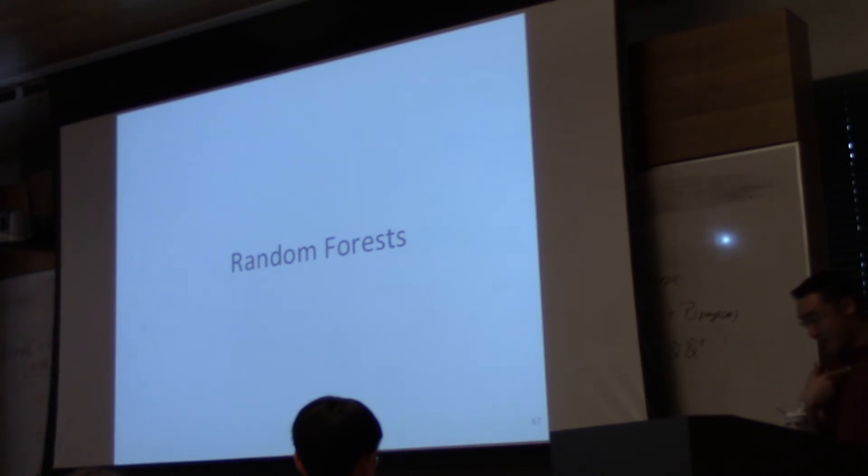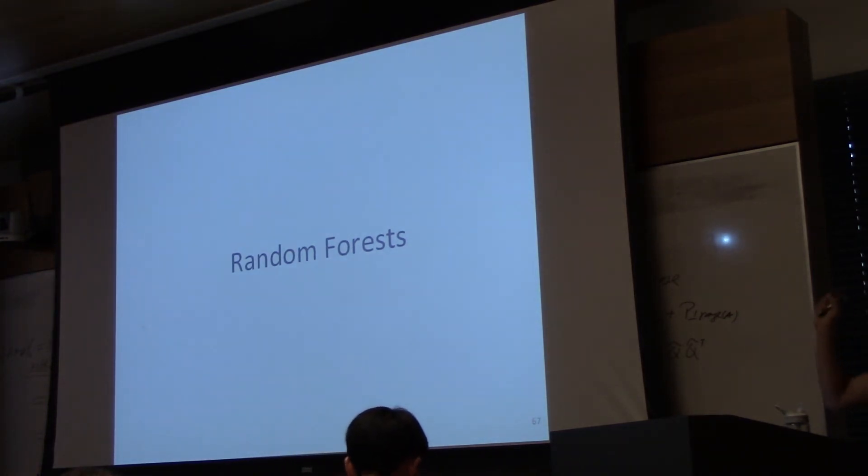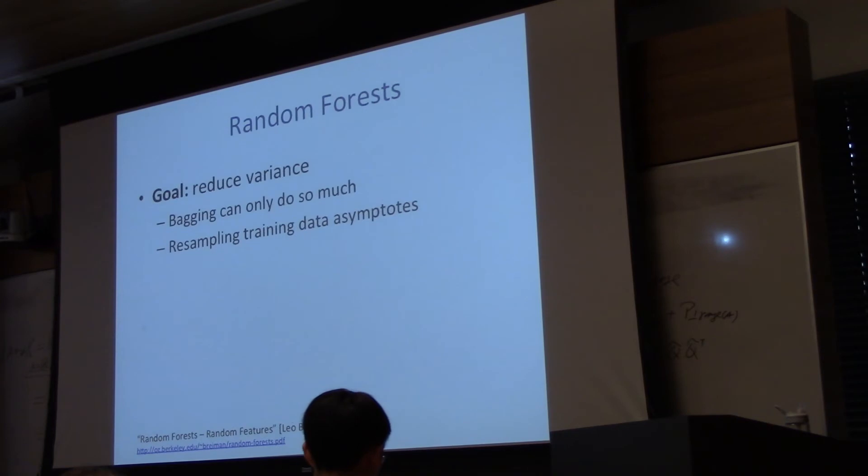Okay, so in the last few minutes, I'm going to cover random forests, which is just a very simple extension of bagging. So bagging is model class agnostic, you can work on it for any model class: SVMs, neural networks. In fact, people do bagging for neural networks. In fact, bagged neural networks are amongst the best performing models in practice. Random forests are specific to decision trees.